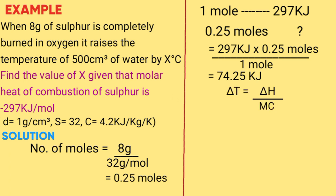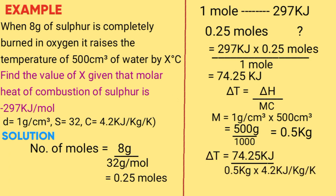The change in T is given by change in H over MC. So you already have change in H, so you find M, mass of solution. Mass of solution is density times volume which is 500 cm³ times 1 gram per cm³, gives you 500 grams. We convert to kilogram because our enthalpy is in kilojoules and our C is kilojoules per kilogram. So it gets 0.5 kilogram. So change in T equals 74.25 kilojoules over 0.5 kilogram times 4.2 kilojoules per kilogram per kelvin. Our answer becomes 35 kelvin which is 35 degrees Celsius.